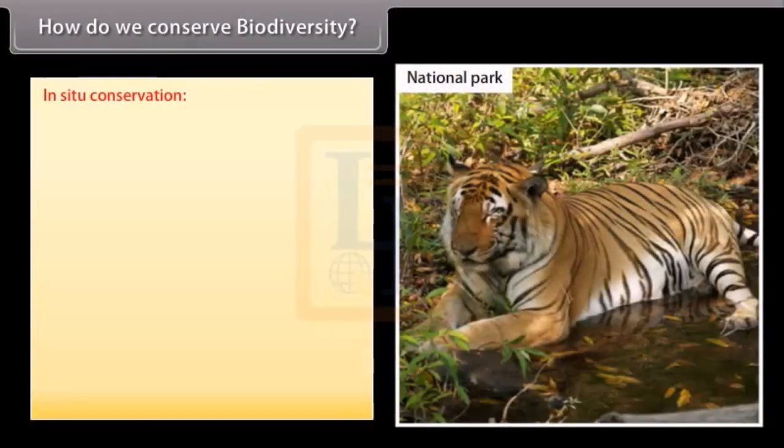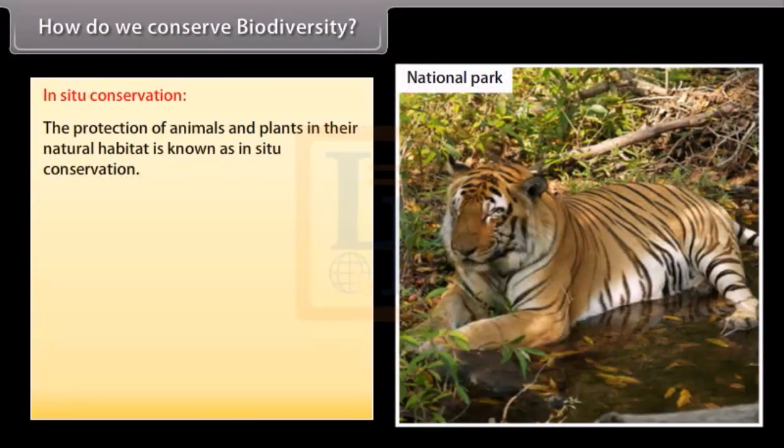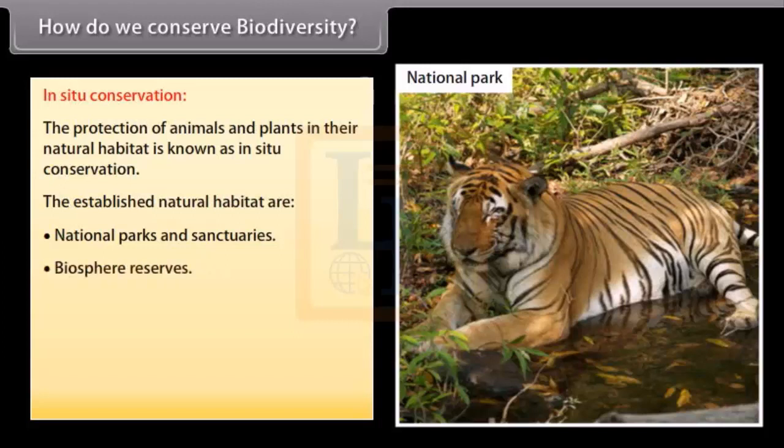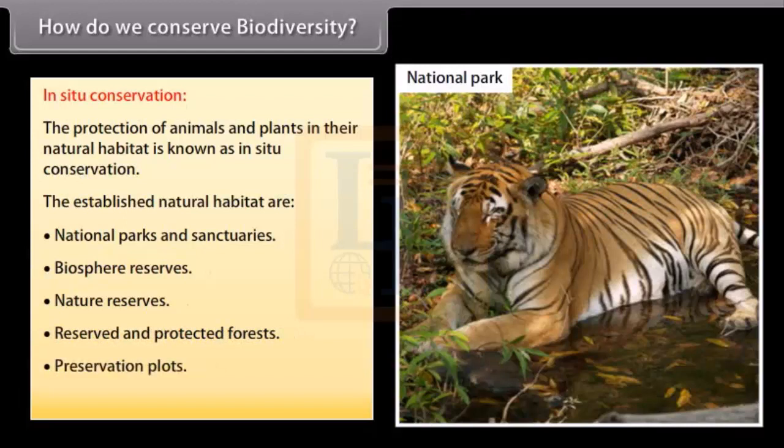In-situ conservation. The protection of animals and plants in their natural habitat is known as in-situ conservation. The established natural habitat are National parks and sanctuaries, Biosphere reserves, Nature reserves, Reserved and protected forests, Preservation plots.